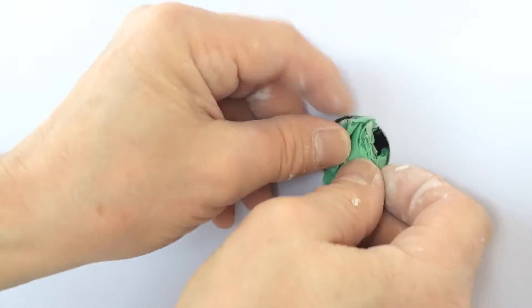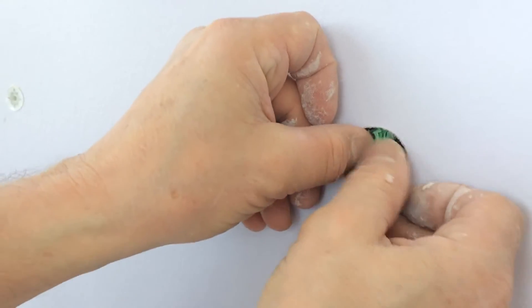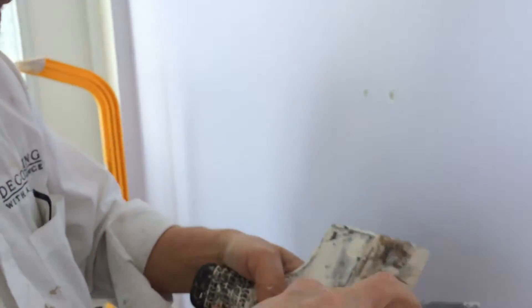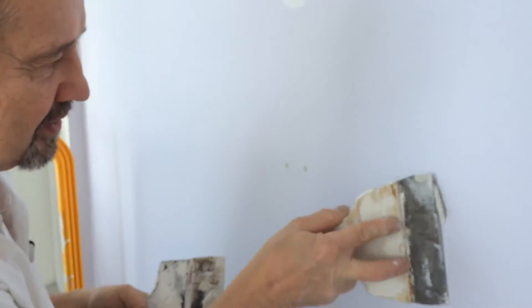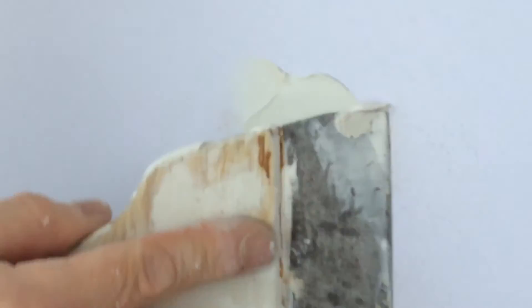And then you can put in a piece of tape and then recess that a bit. Then take your plaster and fill that out like so.